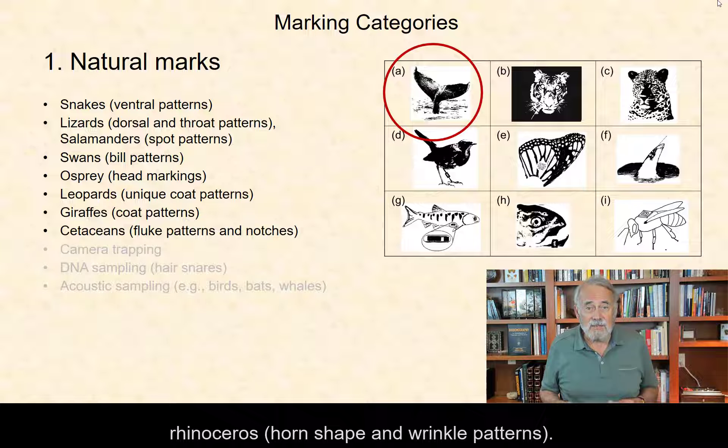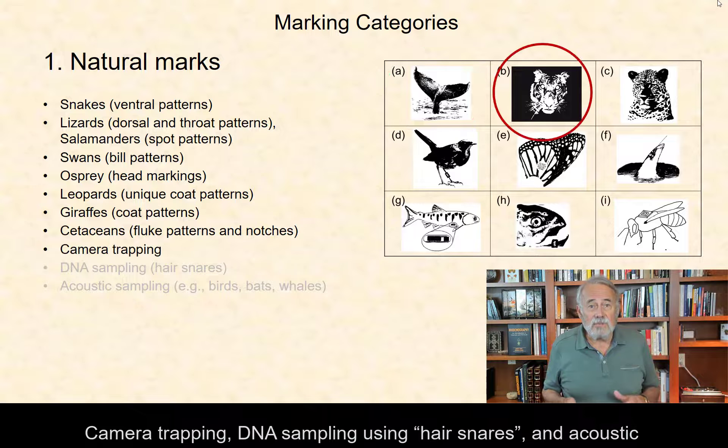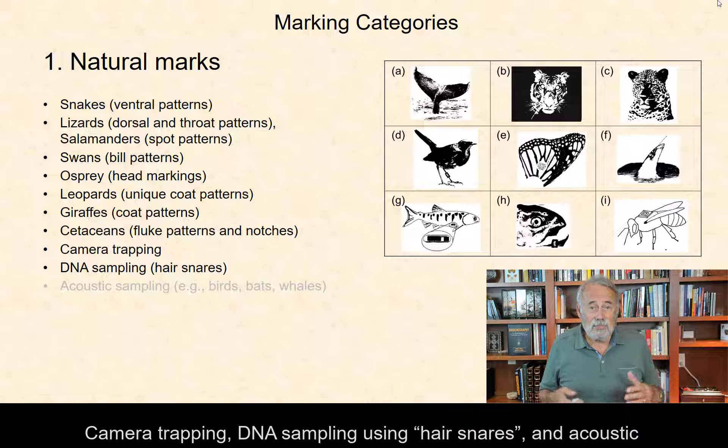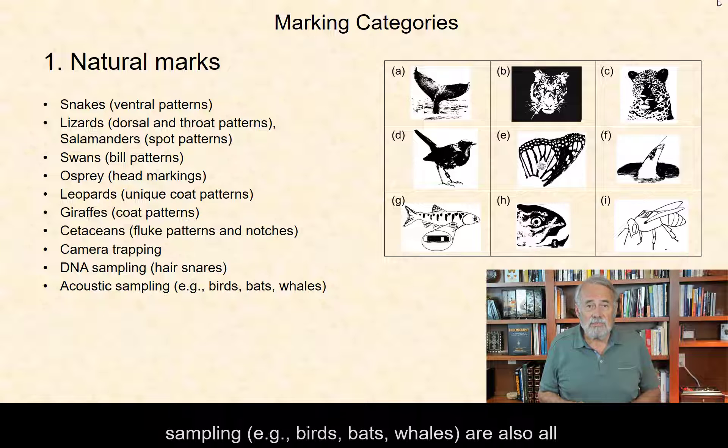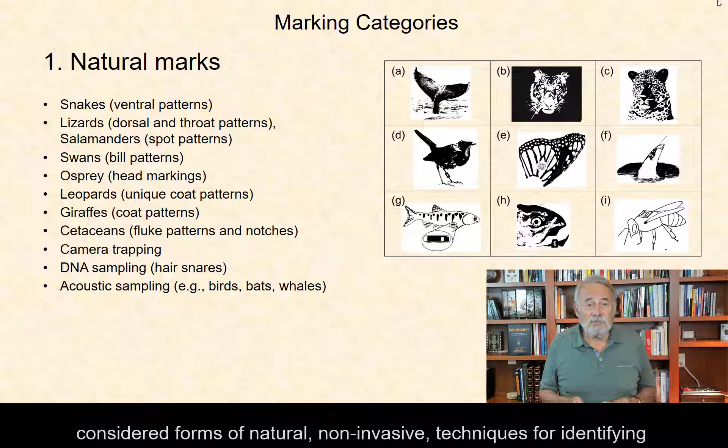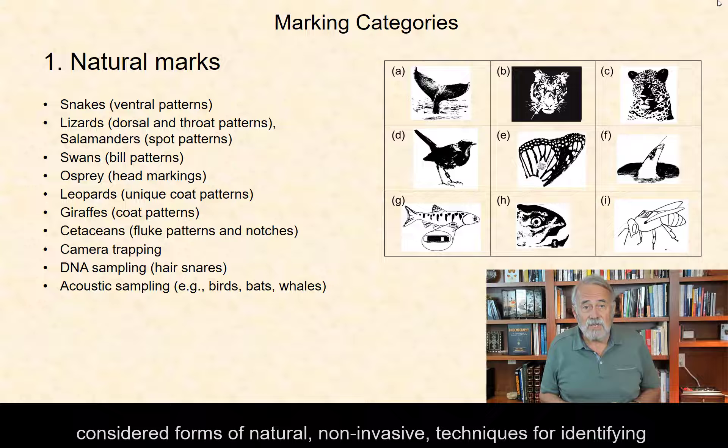Camera trapping, DNA sampling using hair snares, and acoustic sampling, for example for birds, bats, and whales, are also all considered forms of natural non-invasive techniques for identifying individual animals.